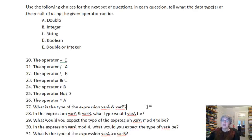All right. Now, these ask the same kind of things in a different way. So, what is the type of the expression var A ampersand var B? Well, ampersand is the string operator, so you know this is going to be a string. And, by the same token, if I'm doing a string operation, we would expect the operands to be strings.